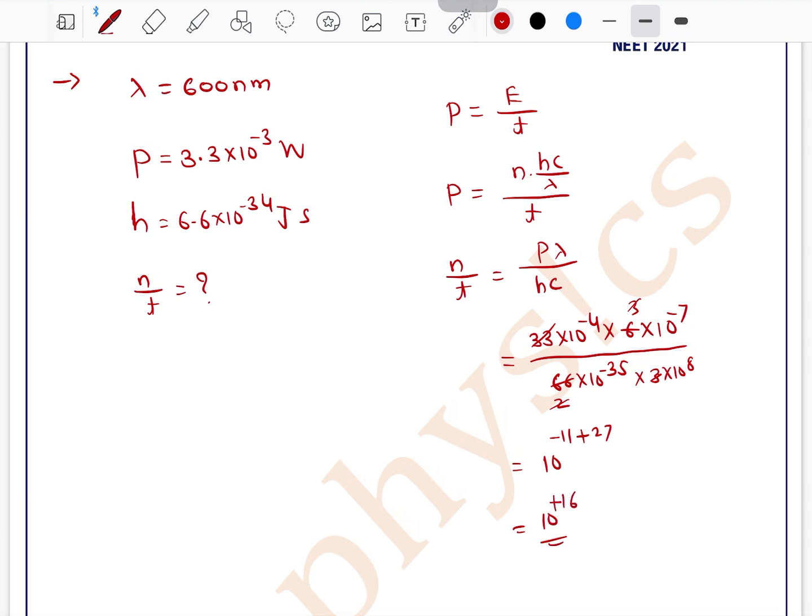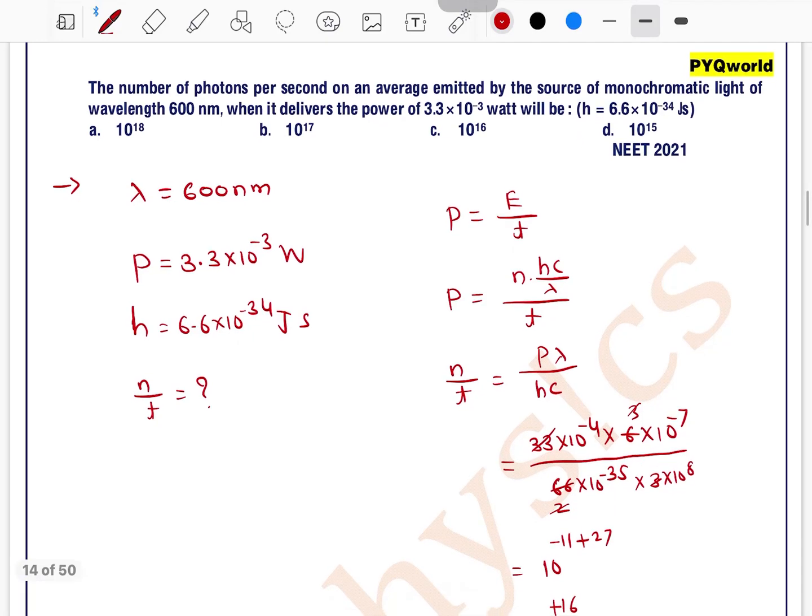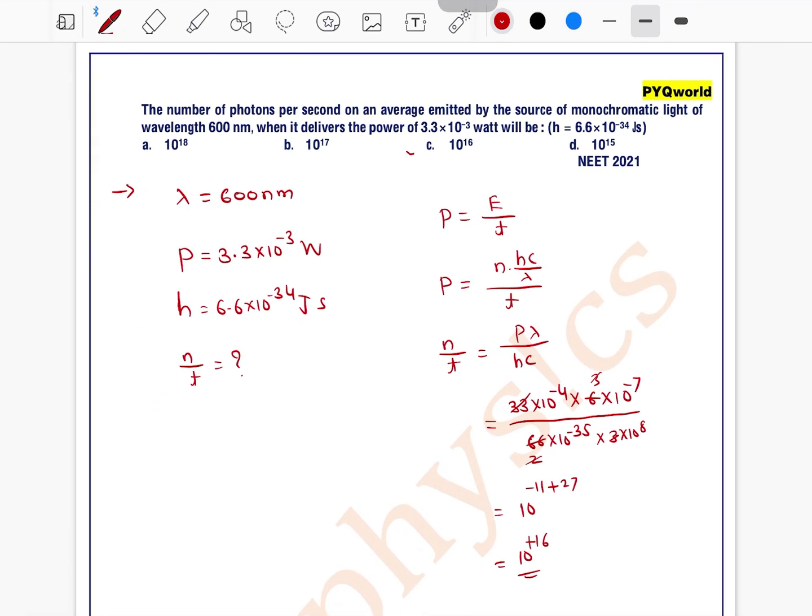So, this will be plus 27. So, we can write 10 to the power plus 16. Number of photons per second is 10 to the power 16. So, option c is the correct one.